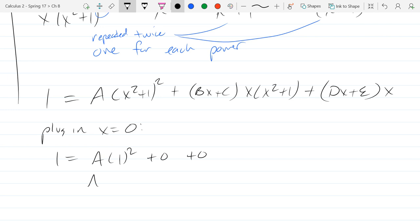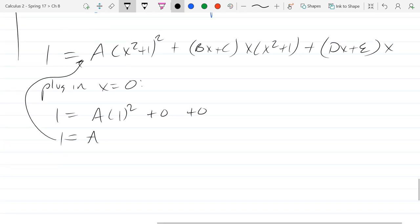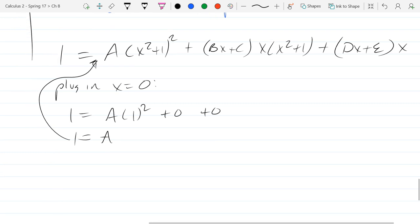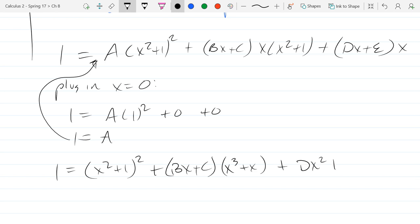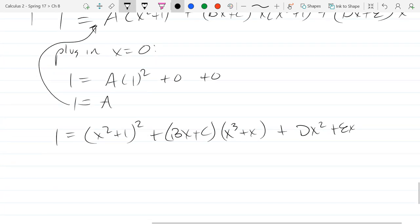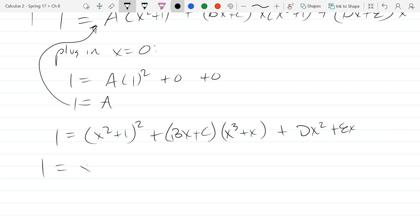We get a equals one, and now we can plug that value back in where we see a, rewrite it with one less variable. I'm going to start distributing some of these, so it's a little less work later. Let's square this out first, then we'll subtract it.